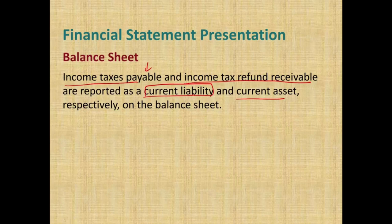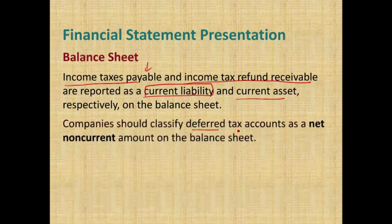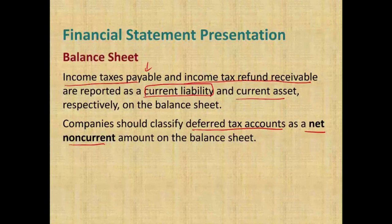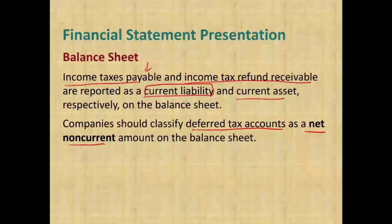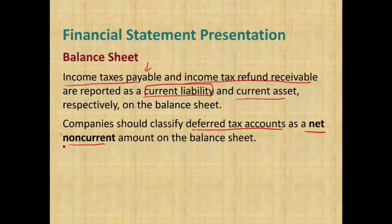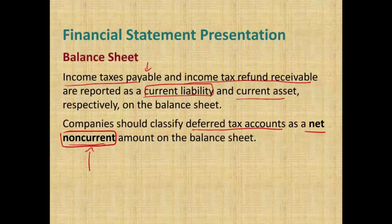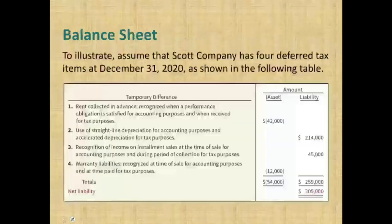Also, the company should classify the deferred tax account as a net non-current amount on the balance sheet. Netting means you cancel assets versus liabilities, and after you net them all out, the net effect is a non-current amount. Please note it is non-current — we no longer have current deferred tax assets and current deferred tax liabilities. It's all non-current.